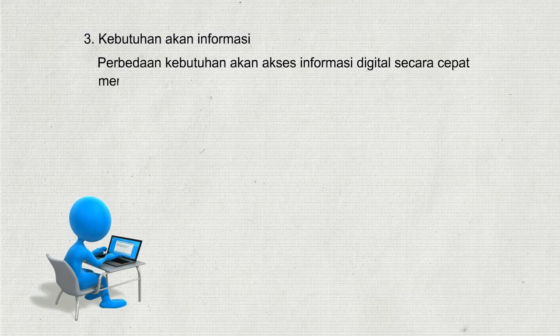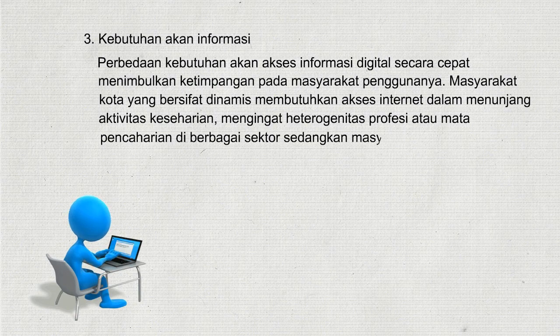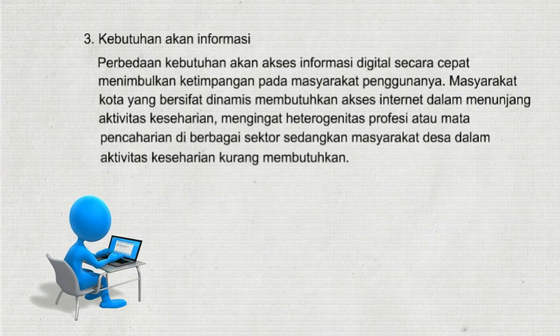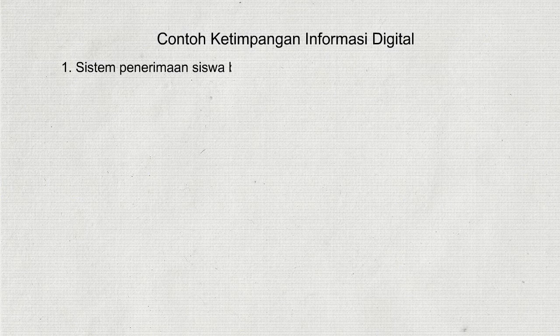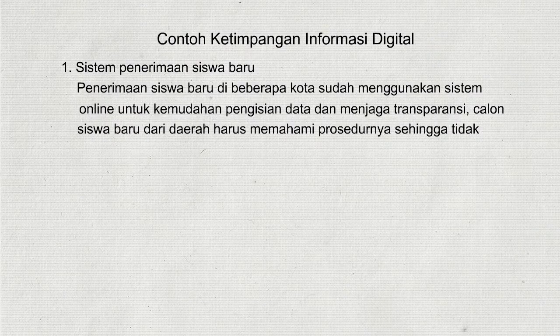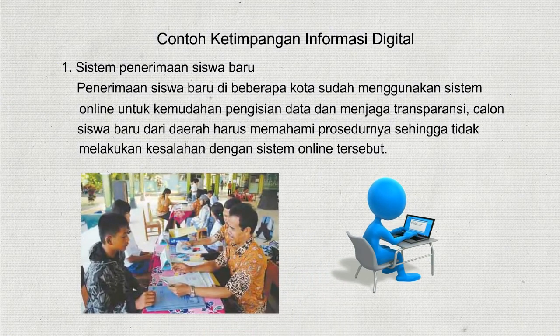3. Kebutuhan akan informasi. Perbedaan kebutuhan akan akses informasi digital secara cepat menimbulkan ketimpangan pada masyarakat penggunanya. Masyarakat kota yang bersifat dinamis membutuhkan akses internet dalam menunjang aktivitas keseharian, mengingat heterogenitas profesi di berbagai sektor, sedangkan masyarakat desa dalam aktivitas keseharian kurang membutuhkan. Contoh ketimpangan informasi digital: 1. Sistem penerimaan siswa baru. Penerimaan siswa baru di beberapa kota sudah menggunakan sistem online untuk kemudahan pengisian data dan menjaga transparansi; calon siswa baru dari daerah harus memahami prosedurnya agar tidak melakukan kesalahan.